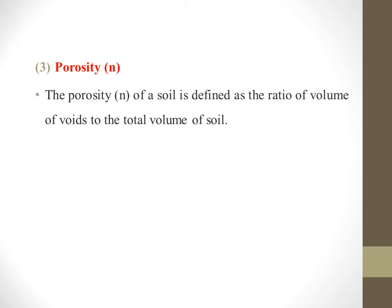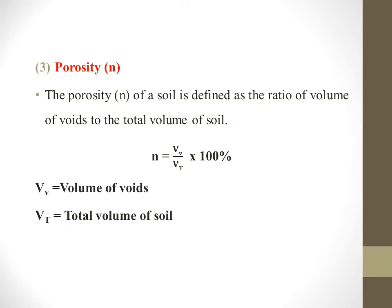The next one is porosity, denoted as N. The porosity of soil is defined as the ratio of volume of voids to the total volume of soil. Note that volume of voids divided by volume of solids is void ratio, while volume of voids divided by total volume of soil is porosity. Porosity is represented in percentage as N = (VV / Vt) × 100, where VV is the volume of voids and Vt is the total volume of soil.